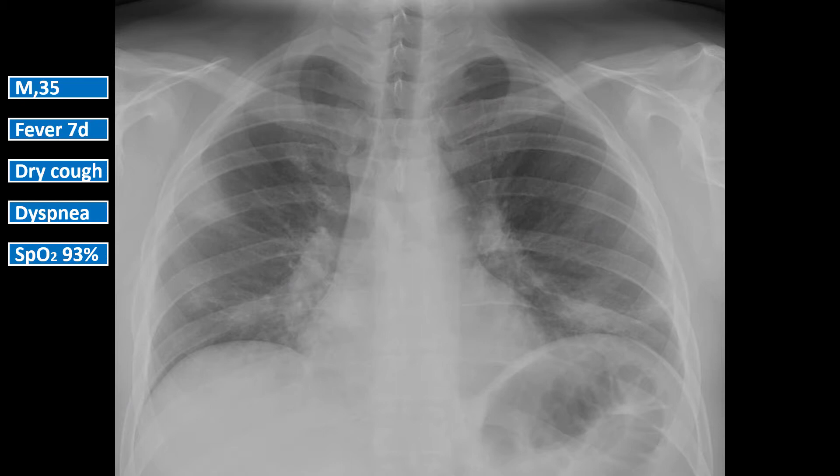Let's take a look at the x-ray once again. There are bilateral opacities, mostly in the lower lobes and the periphery, just beneath the pleura, while the upper portions seem to be spared. This is a typical case of COVID-19 pneumonia.